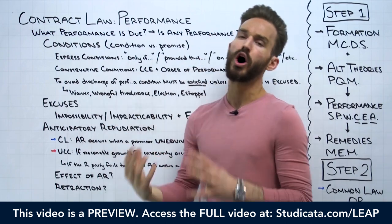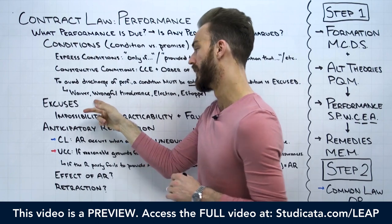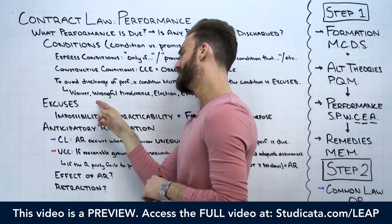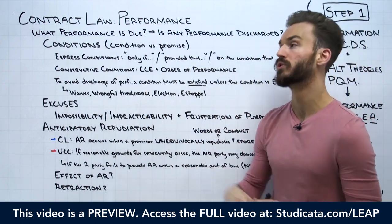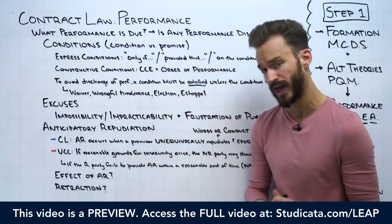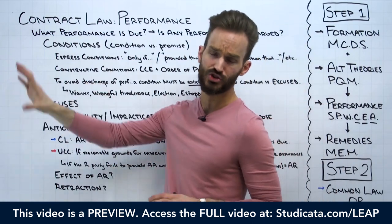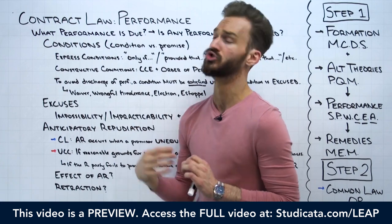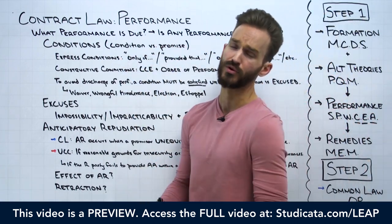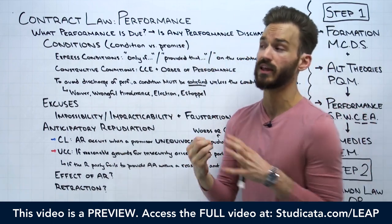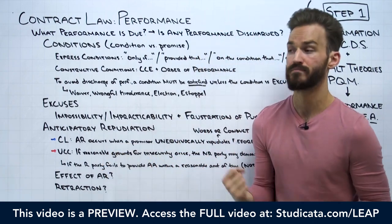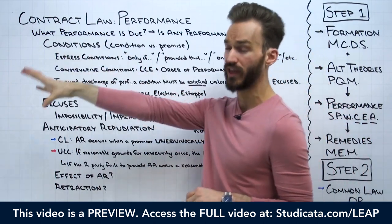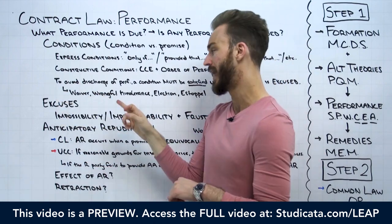Wrongful hindrance is where a party intentionally interferes with the occurrence of a condition in bad faith. For example, if I agree to pay $200,000 on the condition that I can get approved for a loan, I actually have to go out in good faith and try to get a loan. If I intentionally ensure I don't get approved for a loan to get out of the contract, that's wrongful hindrance. It excuses the condition — I can no longer enforce it to have my performance discharged, and I'll still owe the money.